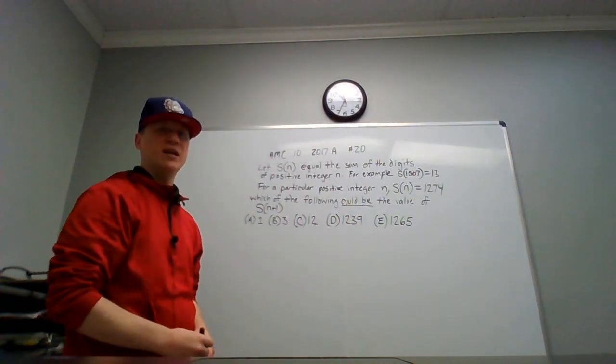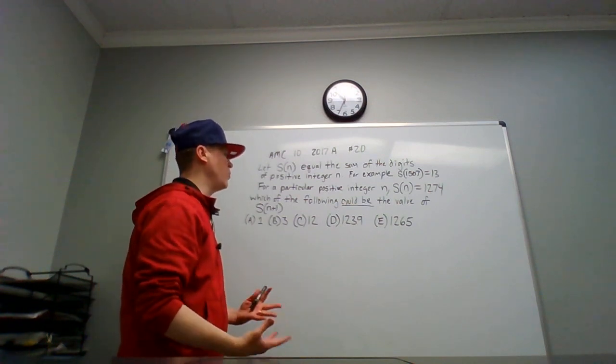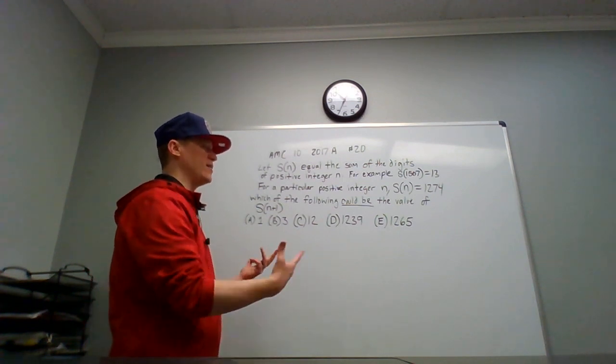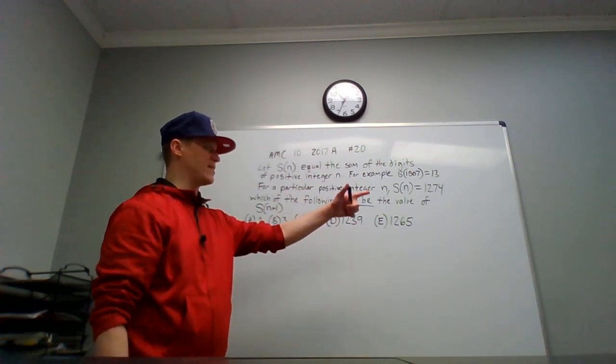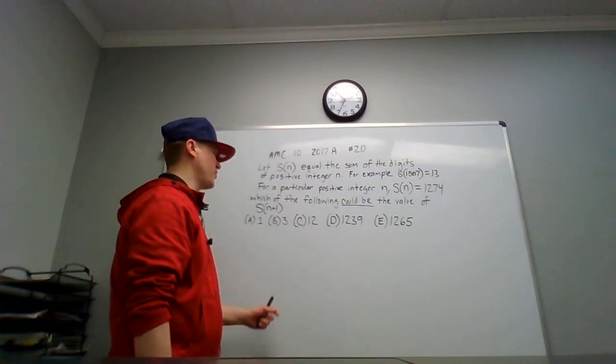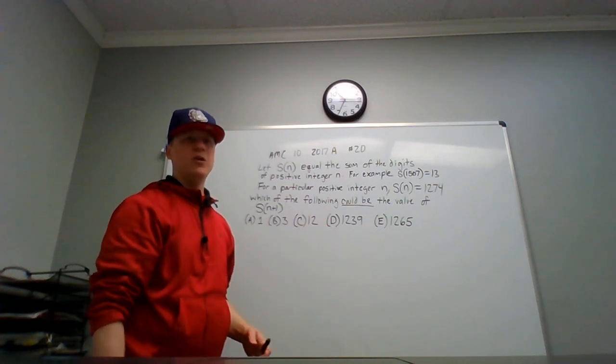Pay close attention to qualifying words like "could be the value of." In other words, we're not going to know exactly what s(n+1) is. It could vary from different choices of n that have a digit sum of 1274. So don't think that there's only one answer and then you look and find your answer. Rather, we have to find something that is a possibility for s(n+1).